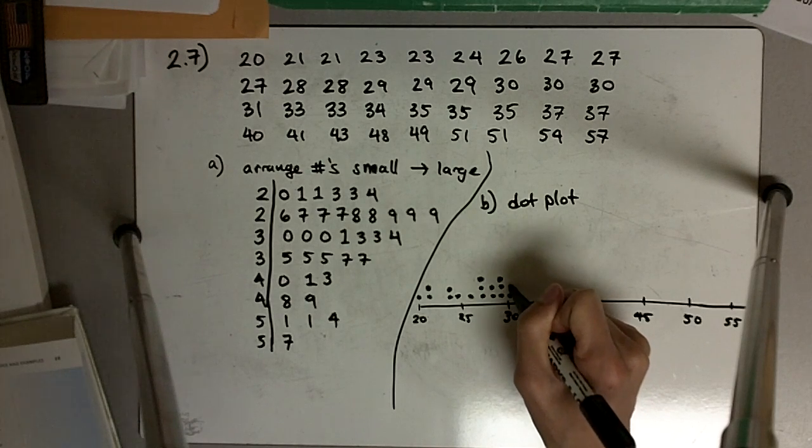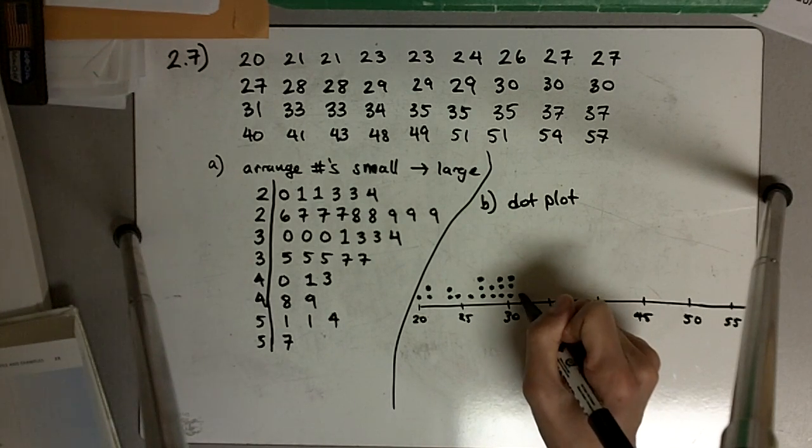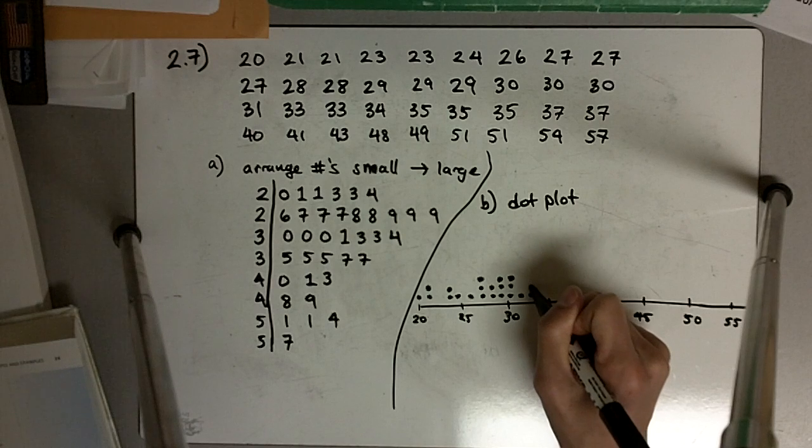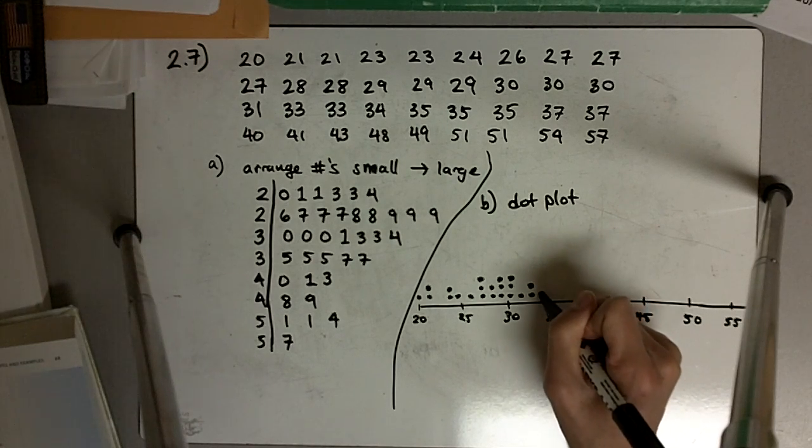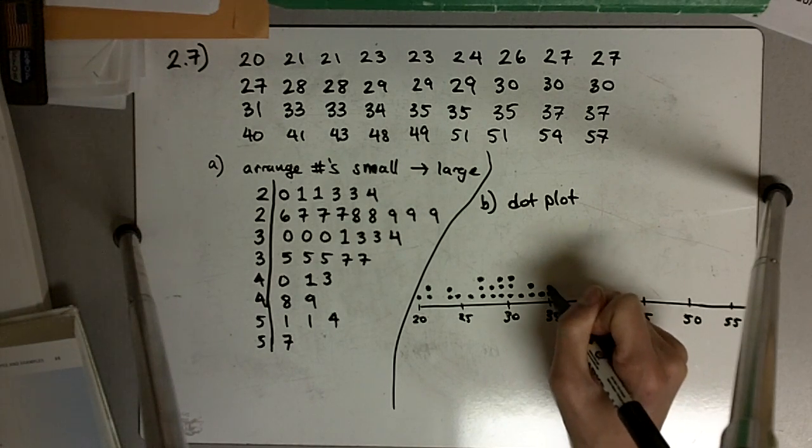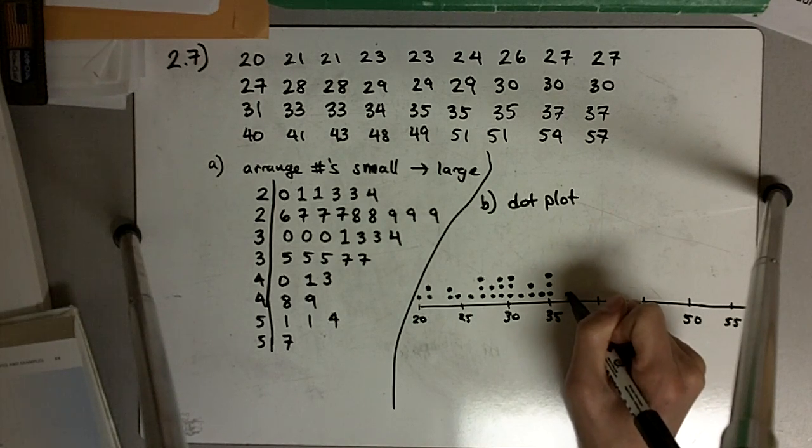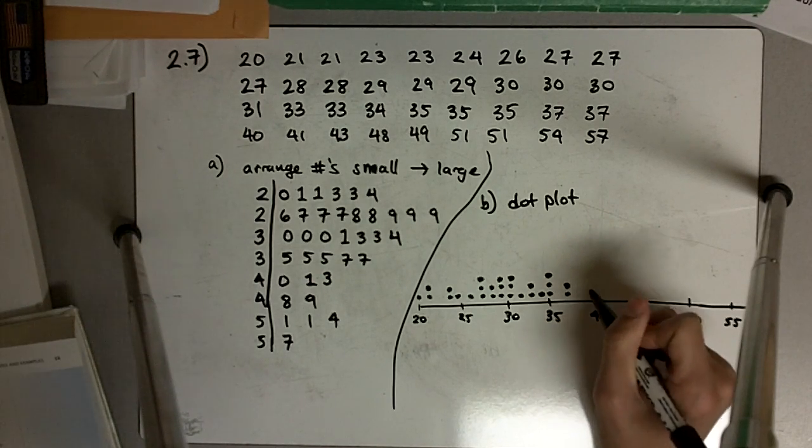And we have the 30s, and the 30s, 31, the 33s, and the 34, and the 35s, 36, 37s, 37s.